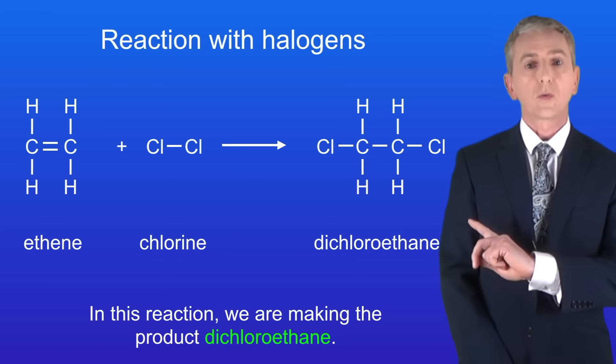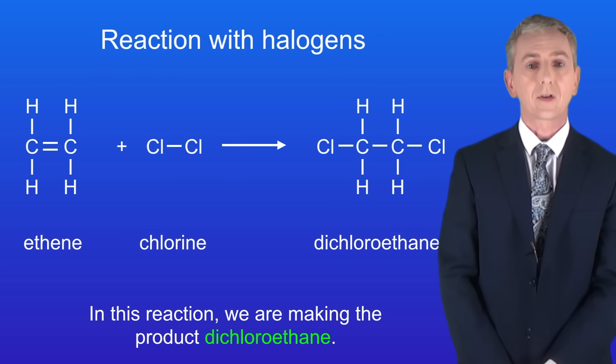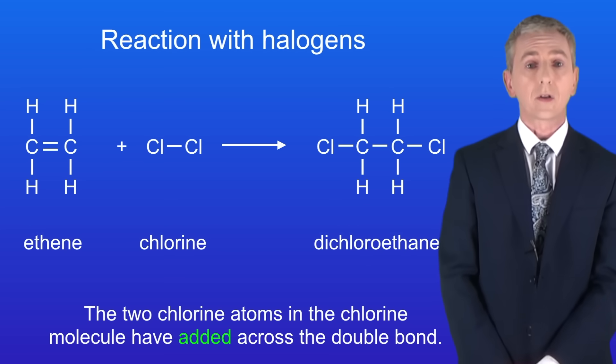I'm showing you here the reaction between ethene and chlorine gas Cl2. In this reaction we're making the product dichloroethane. As you can see the two chlorine atoms in the chlorine molecule have added across the double bond.